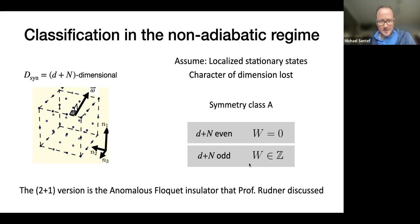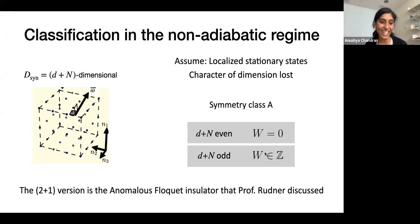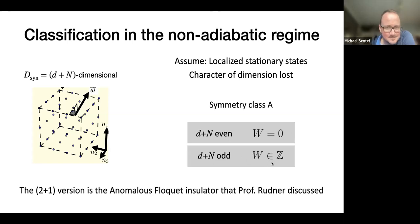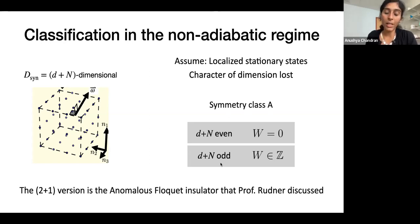There's a somewhat related question in the chat: why do we always get a Z invariant for the driven topological phases — why not Z_2? I'm not sure there aren't Z_2 invariants in other symmetry classes potentially. One way to understand why it's Z is that it's actually the same classification as static systems in one lower dimension in symmetry class A.